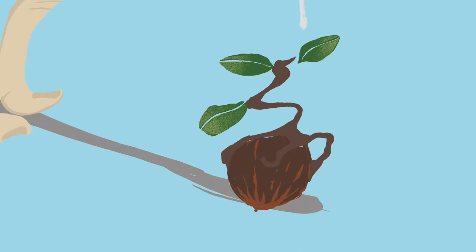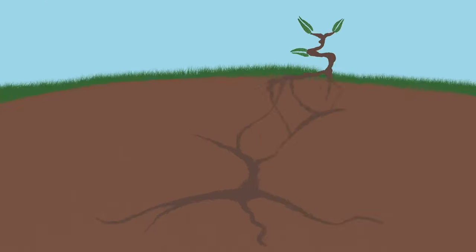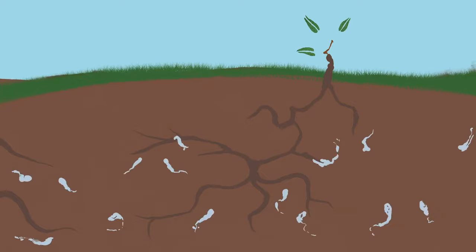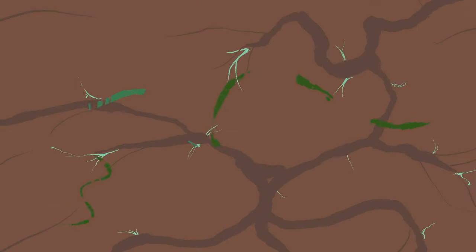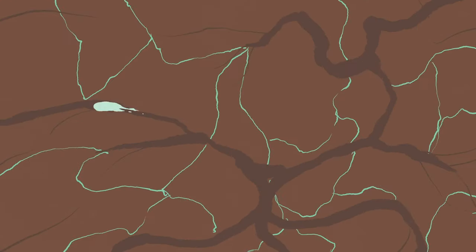Plants use living soil to stay healthy and strong, relying on it to deliver water, oxygen, and nutrients to communicate and share resources through networks of microbes.